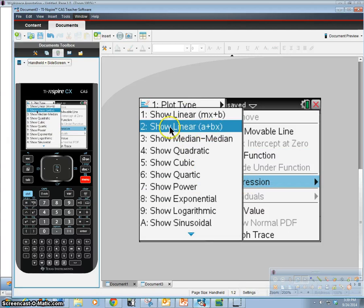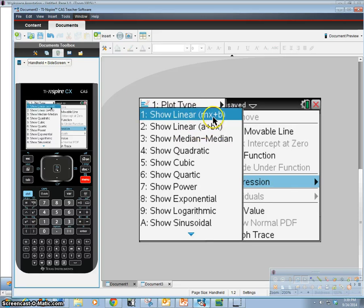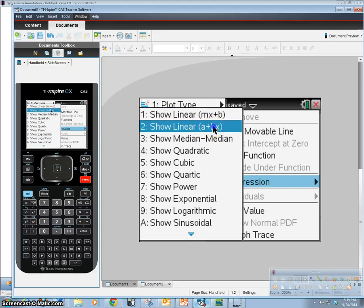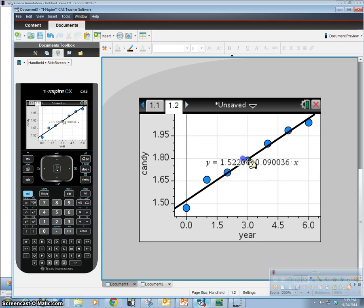All right. So we're going to show our linear regression. We're going to use a plus bx. And later on, when we see, I have another video of using some of these formulas later, and I'll show you why we're going to use this one and not mx plus b. So go ahead and do a plus bx. And we have our formula. Y equals 1.5 plus 0.09 times x. And I'll go ahead and truncate those in just a second.